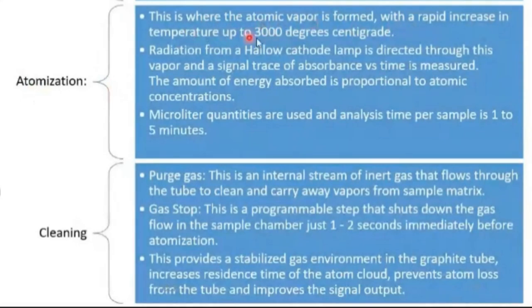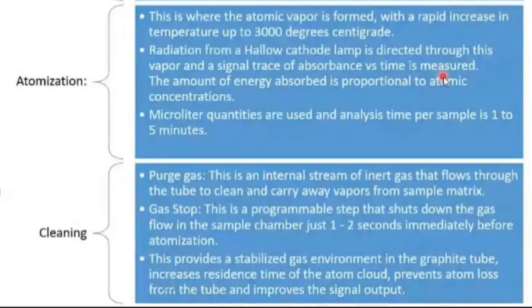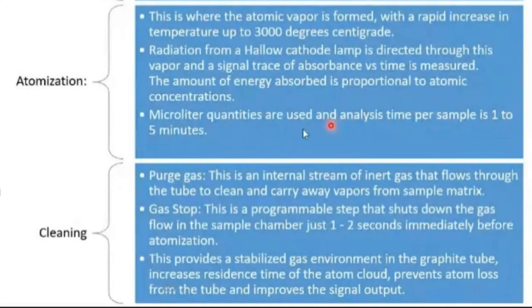Then comes atomization — formation of atoms. The atomic vapor is formed with a rapid increase in temperature up to 3000°C. Radiation from a hollow cathode lamp is directed through this atomic vapor, and a single trace of absorbance versus time is measured. The amount of energy absorbed is proportional to the atomic concentration. Microliter quantities are used; analysis time per sample is one to five minutes.